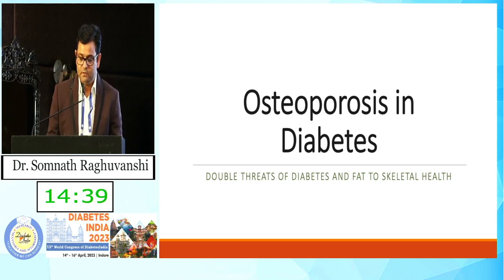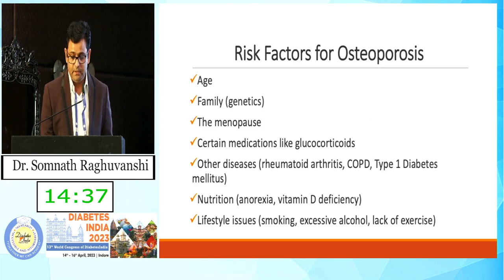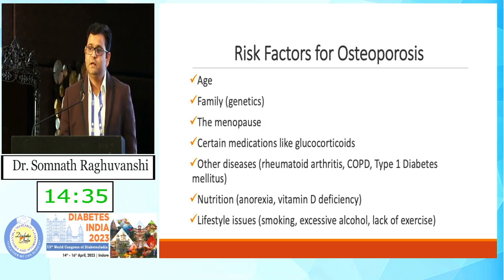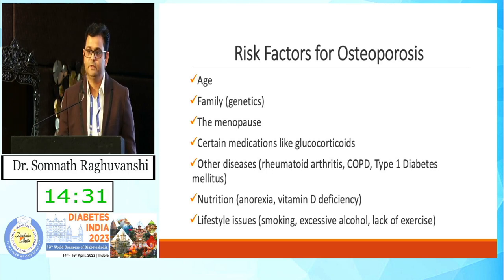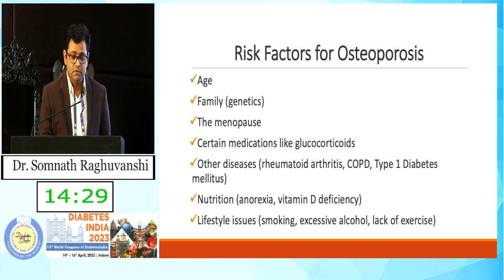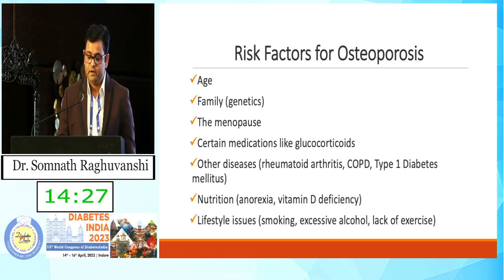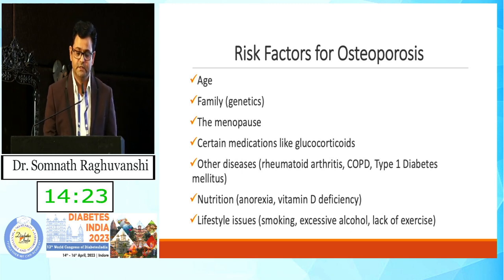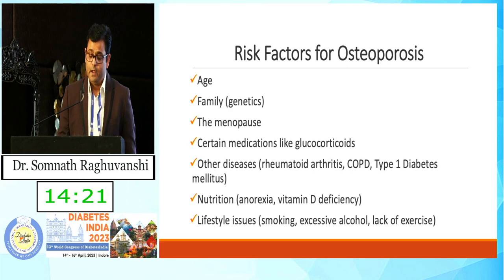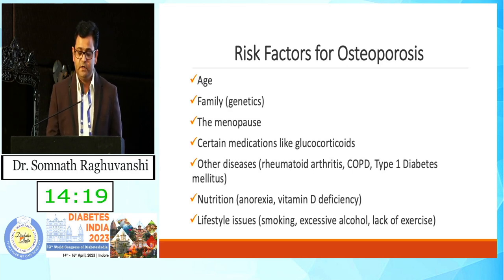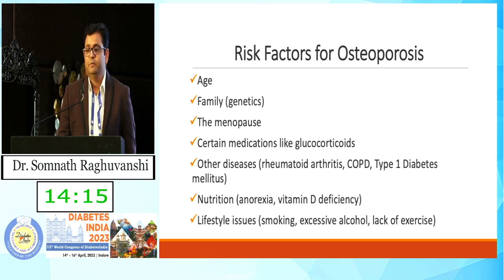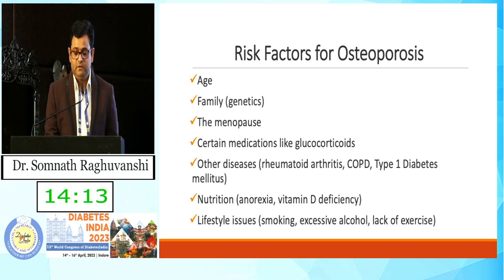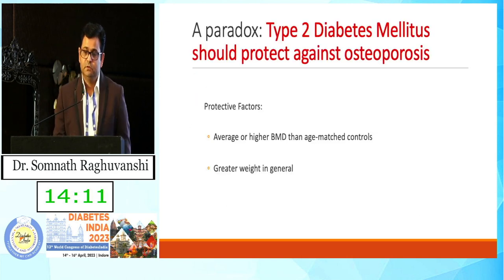Why is it important to discuss osteoporosis and diabetes together? Because these are shared risk factors: older age, family history of osteoporosis, genetics, menopause, certain drugs like glucocorticoids or antiepileptics, and other diseases like rheumatoid arthritis, COPD, type 1 diabetes, and poor nutrition and lifestyle issues. But type 2 diabetes has not been included as a risk factor for osteoporosis, so there is a need to discuss this.